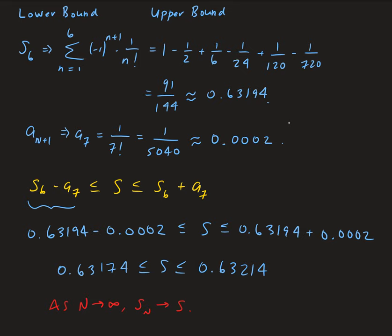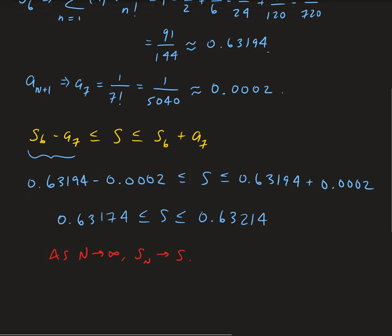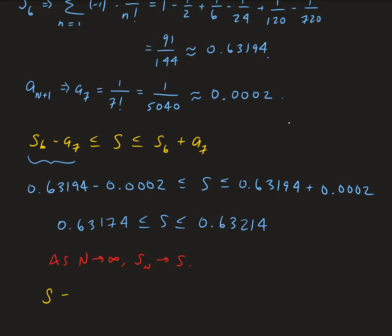It turns out the actual sum of this series is 1 minus 1 over e, which is approximately 0.63212 rounded to five decimal places. You can see it falls between the lower bound and the upper bound.